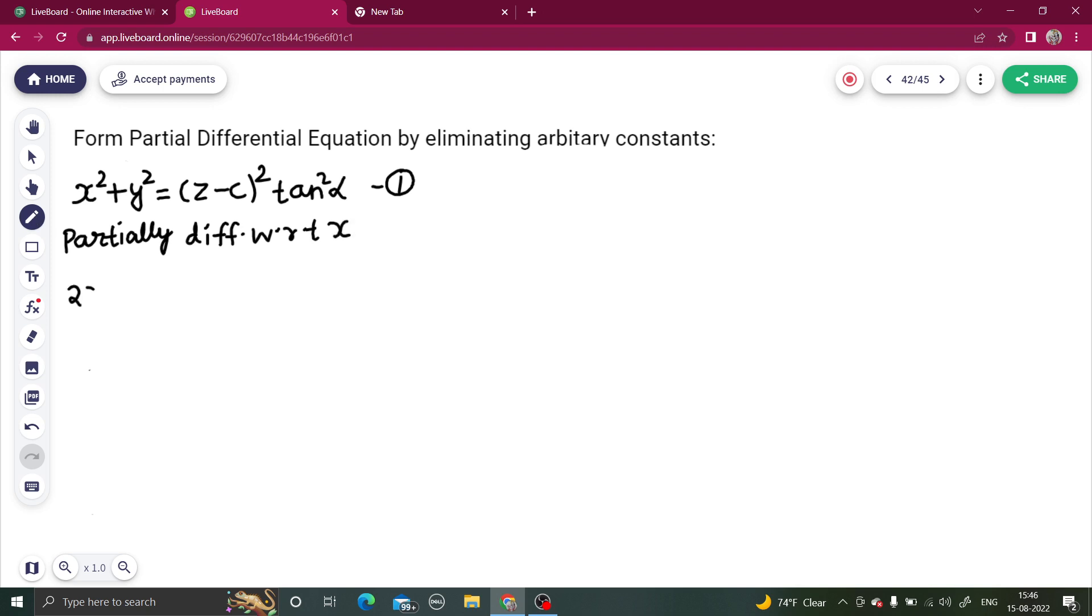You will get 2x. Now, because y is constant, y square is also constant, so its derivative is 0 equals to, here you use the chain rule, 2 times z minus c and derivative of z minus c is simply del z by del x. This 10 square alpha remains as it is.